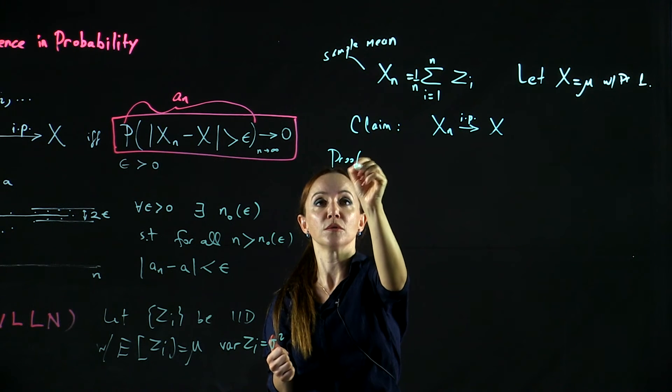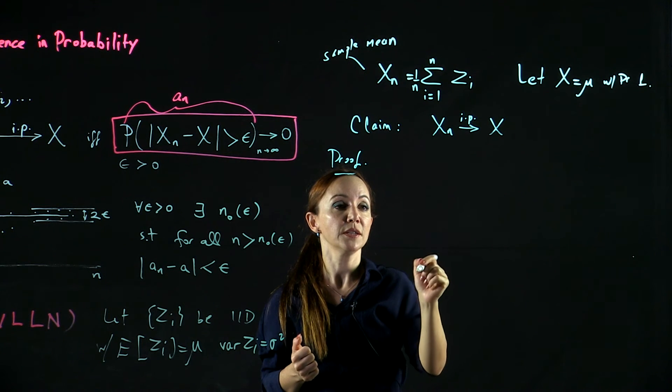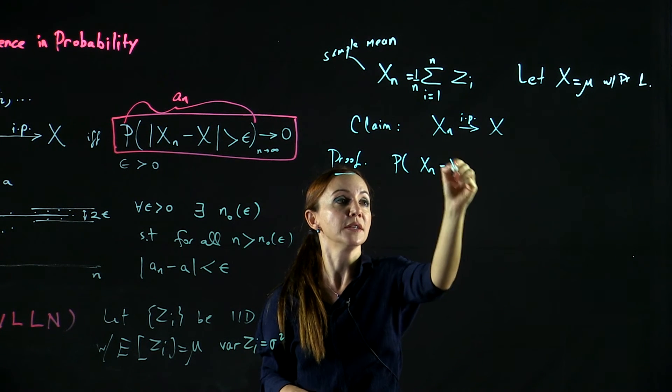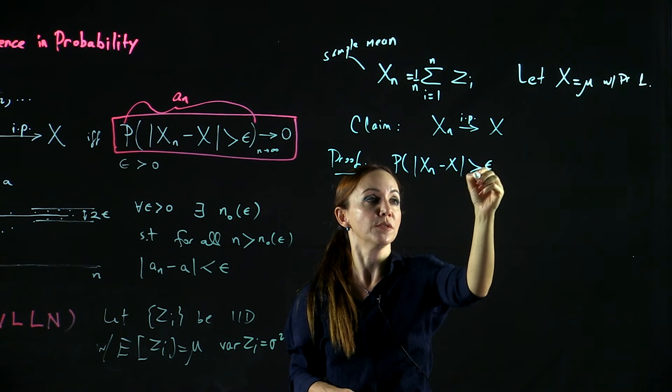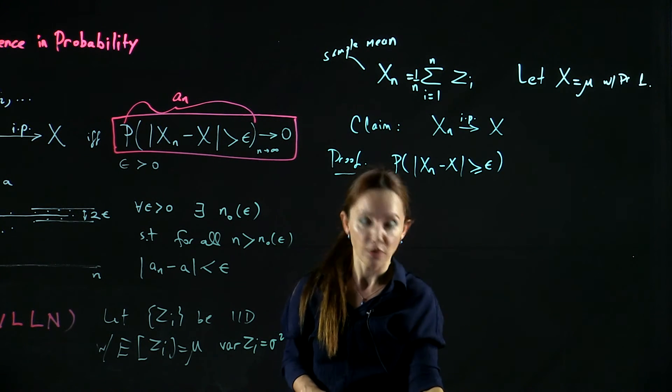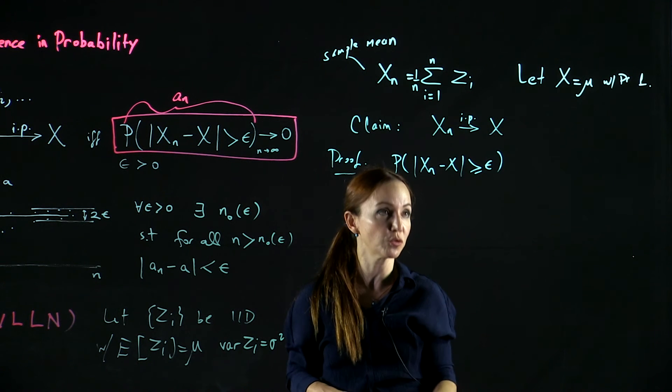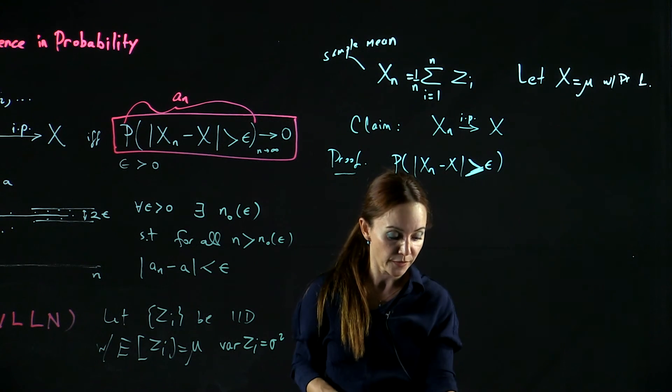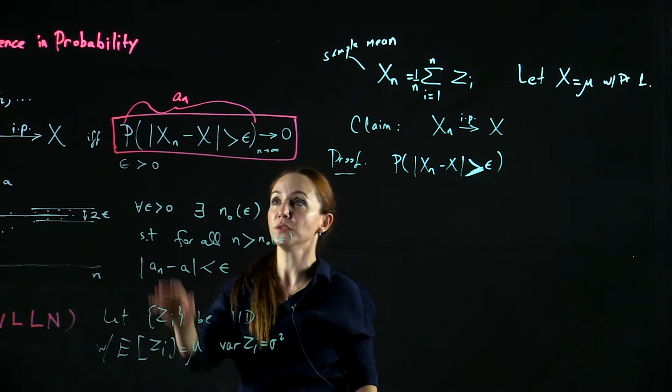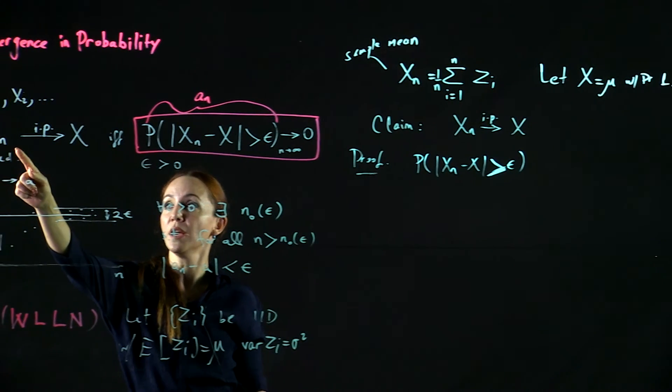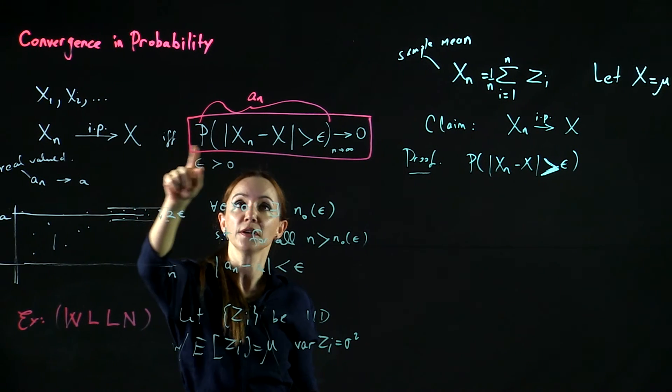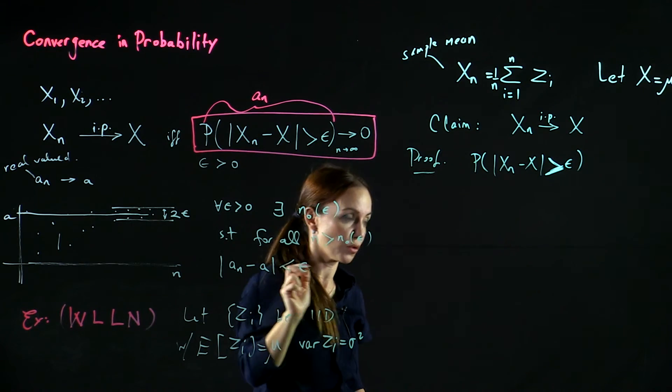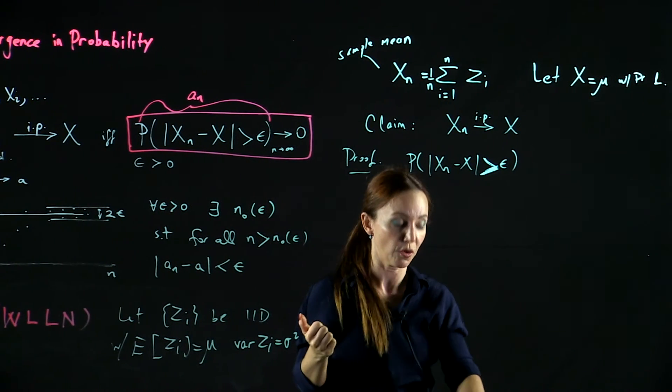Here's the proof. Consider the probability that XN minus X is bigger than epsilon. According to the definition of convergence in probability, XN will converge to X if and only if this probability converges to 0. So let's try to show that this probability will converge to 0.